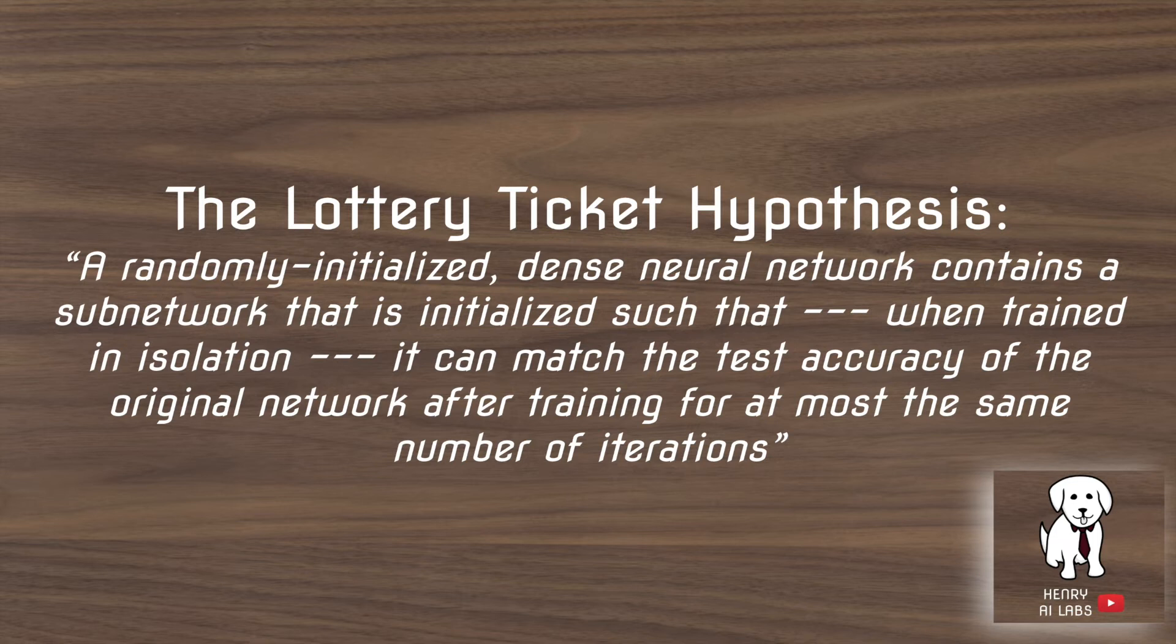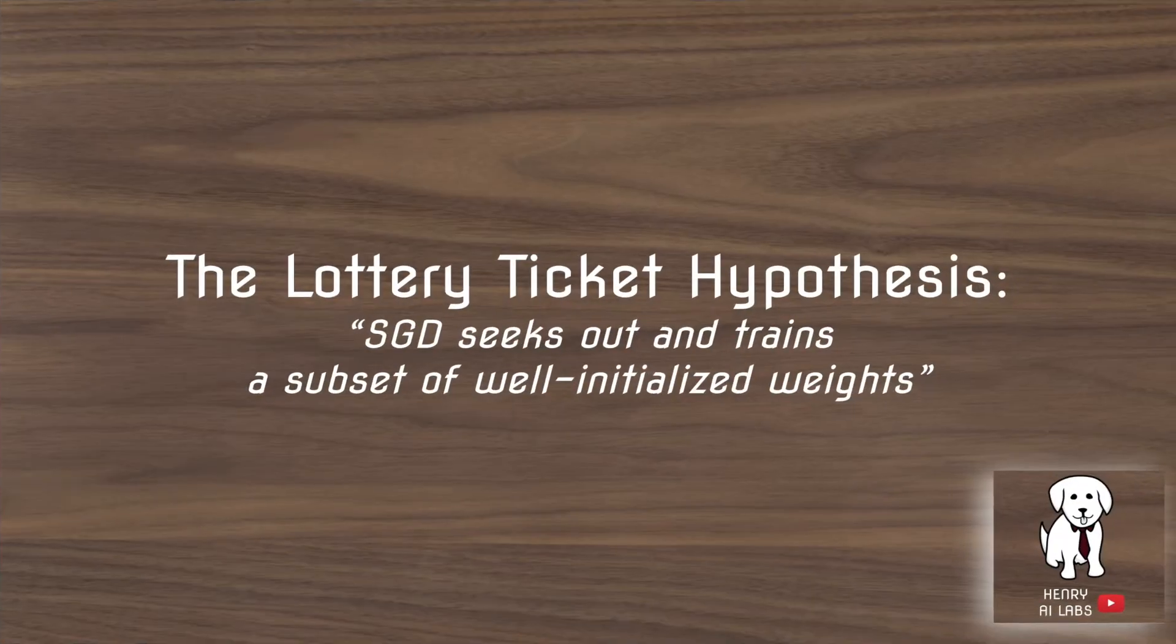This is the lottery ticket hypothesis in an intuitive way. In a neural network from a random initialization, there exists a subnetwork within the network that can reach the same accuracy as the entire network. So this changes our understanding of stochastic gradient descent. It says that SGD seeks out to find a subset of well-initialized weights in the entire network.